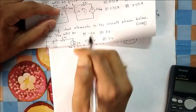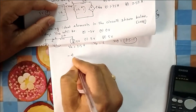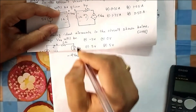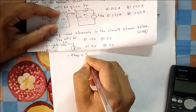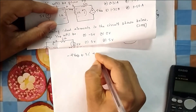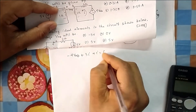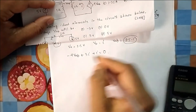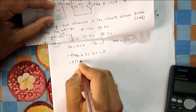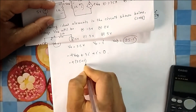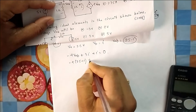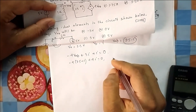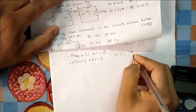Taking KVL in the outer loop: minus 4Vab plus 3I plus I equals zero. Substituting Vab equals 2.5 minus I: minus 4(2.5 minus I) plus 4I equals zero. Solving gives I equals 10/8, which equals 1.25 amperes.